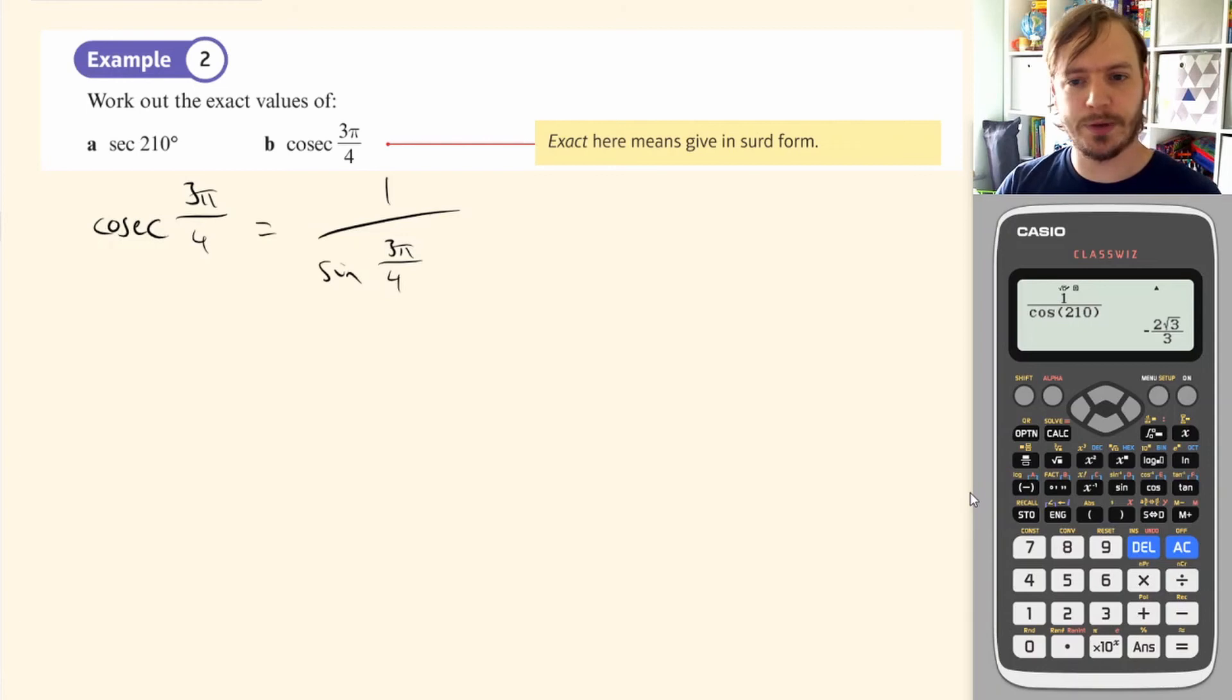3 quarters of pi, so on our CAST diagram, that's right here. That's 3 pi over 4. The sine value is the height. So that's the same as sine of pi over 4. So this is equal to 1 over sine of pi over 4.